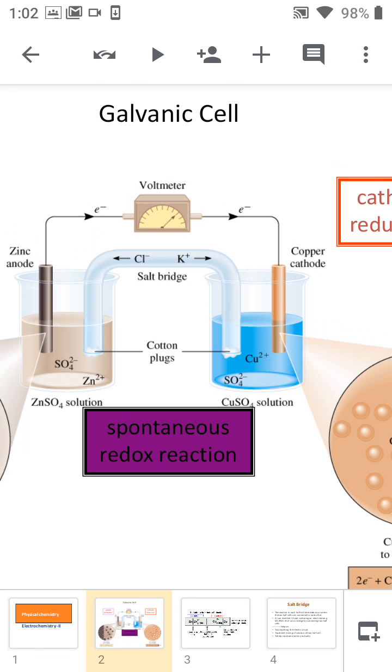Salt bridge means the aqueous solution of KCl is filled in agar-agar medium, which is filled in a U-tube glass tube connecting the two beakers. So this is the simple representation of the galvanic cell.